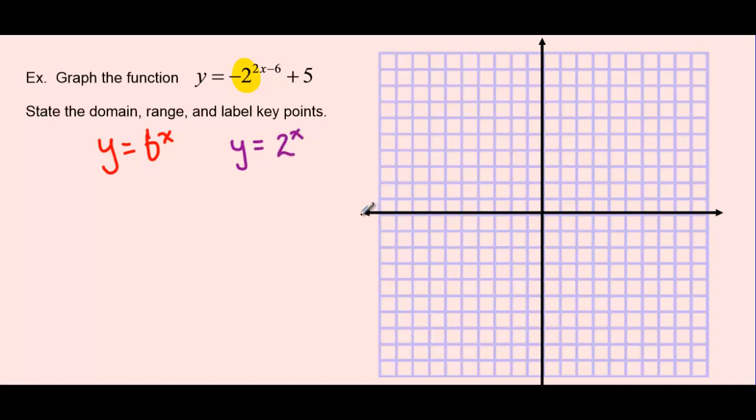Now that we have this base function, we can now figure out what the other transformations will be on this parent function. I'm going to write out R, S, and T to represent our three different types of transformations. And let's see if we can figure out by looking at the equation what the different transformations are. The first thing I notice is the negative sign that's in front of the 2.